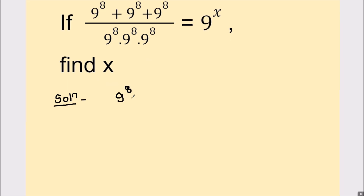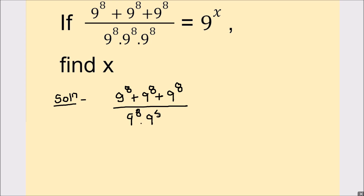First we will rewrite the equation: 9 raised to power 8 plus 9 raised to power 8 plus 9 raised to power 8, divided by 9 raised to power 8 times 9 raised to power 8 times 9 raised to power 8, equals 9 raised to power x.